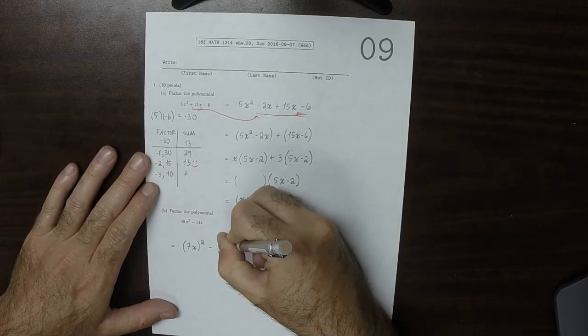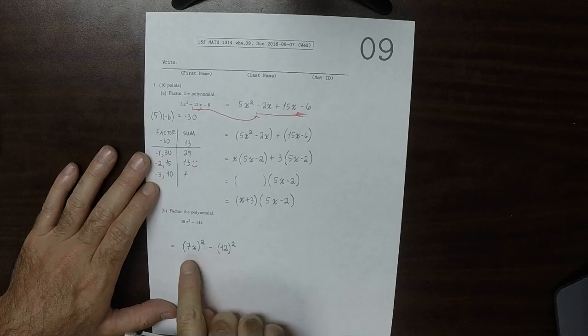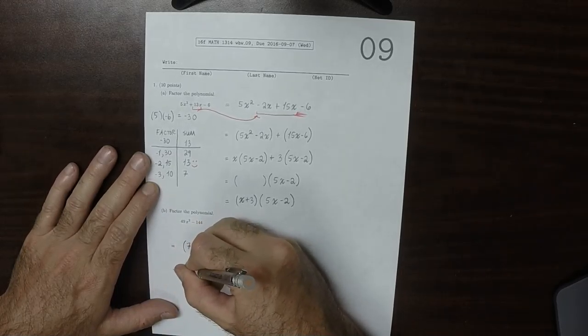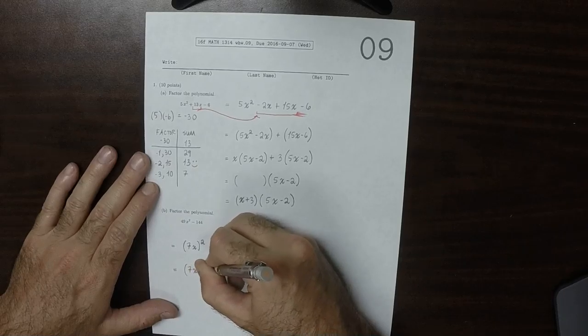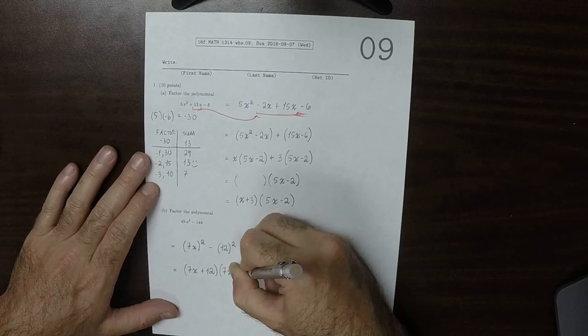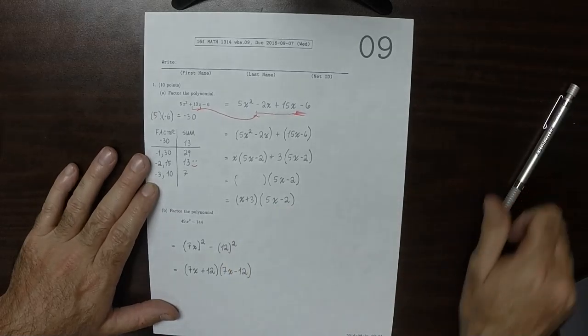So this is now the difference of squares, which means that it can be expressed as the product of conjugates. So 7x plus 12 multiplied by 7x minus 12. And that's the answer.